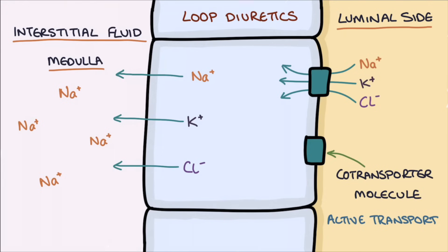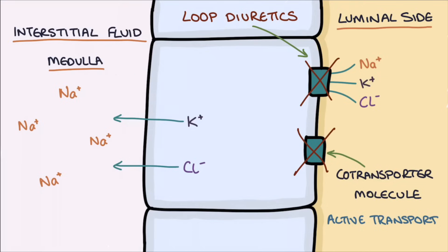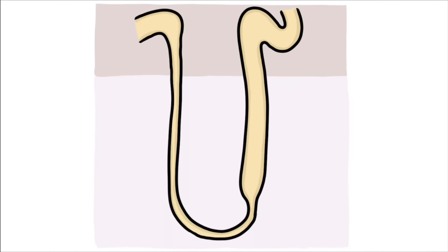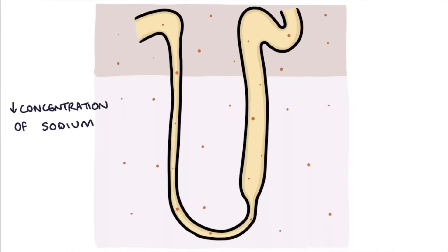Loop diuretics like furosemide and bumetanide work by blocking the function of the membrane co-transporter protein in the cells of the thick ascending loop. They prevent sodium from being pumped out of the filtrate into the interstitial fluid of the medulla of the kidney, and as a result there's a lower concentration of sodium and other solutes in the interstitial fluid, so water is not drawn out of the descending loop and remains in the filtrate.